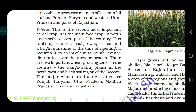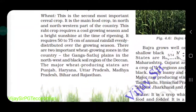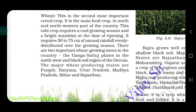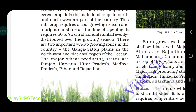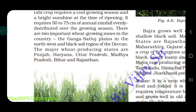Wheat is a rabi crop which requires a cool growing season in winter, from October to December, and is harvested in April to June. It requires bright sunshine at the time of ripening and 50 to 75 centimeters of rainfall. There are two important wheat-growing zones in India: the Ganga-Satluj plains in the northwest and the black soil region of the Deccan.